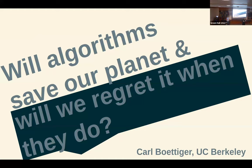Hi everyone, we're going to get started here in just a second. I'm incredibly excited to welcome Dr. Carl Bettinger to the CPB seminar today. Carl is a former population biology graduate student who did really great work with Alan Hastings and others here in the department. He's a co-founder of the R Open Science Project and now works as a professor at UC Berkeley, four minutes away from us. Carl does lots of really cool work in ecological forecasting, machine learning, geospatial things — a little bit of everything that's super cool. So I'm really excited to welcome Carl to speak today.